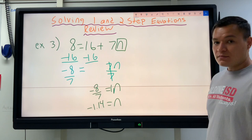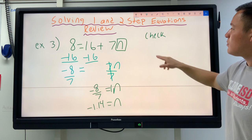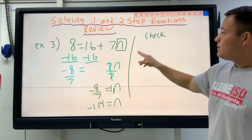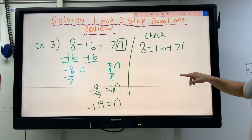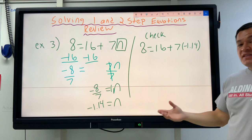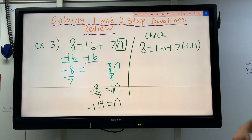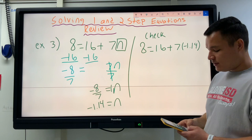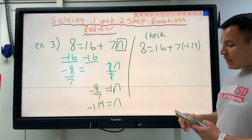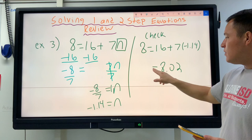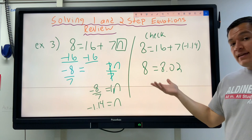But we're supposed to check it, so let's check it. We're going to take negative 1.14 and we're going to put it for N. 8 equals 16 plus 7 times negative 1.14. So this is another way that you can see multiplication is if you put something in a parenthesis next to a number, that means multiplication. So let's just check in our calculators. 16 plus 7 parenthesis, negative 1.14, close the parenthesis, and we get 8.02, and on the left side we had 8. So these two things aren't exactly equal, but that's because we rounded it right here.